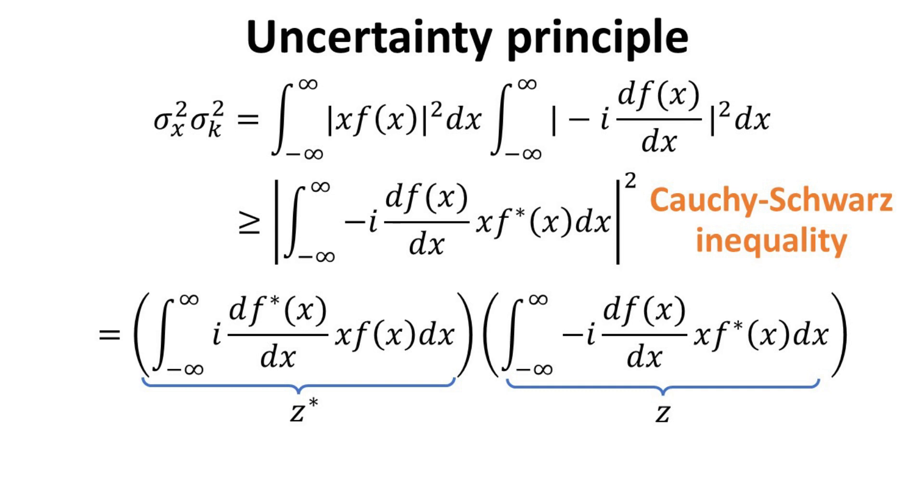We can expand out the modulus square in terms of the product of a complex number z with its complex conjugate as shown. The magnitude square of this complex number z must always be larger than the square of its imaginary part. We thus arrived at the so-called Fourier uncertainty principle. But we can further simplify this expression.